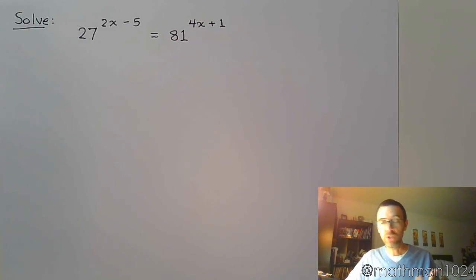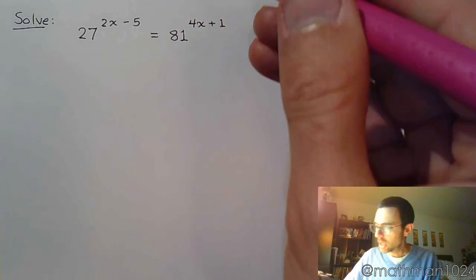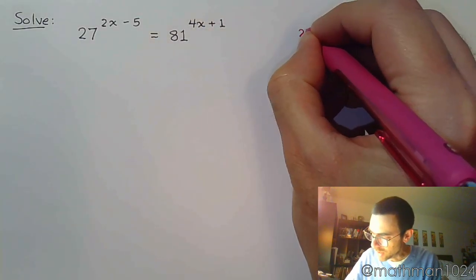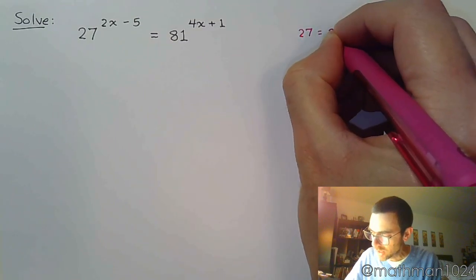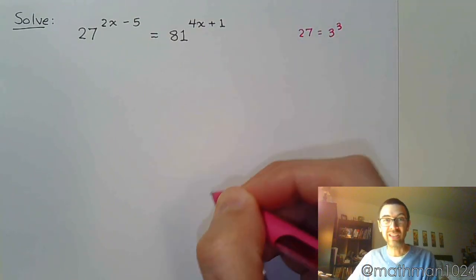All right, so as we've been showing, we have to find the common base for these guys. And again, if you have your power sheet, it should be pretty easy to identify. Where does 27 show up? So 27, that being the smaller of these two numbers here, maybe you recognize this. You say, well, I know that 27 is 3 to the 3rd. I work with that guy a lot.